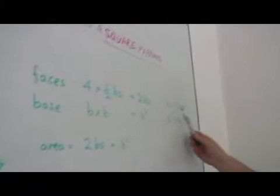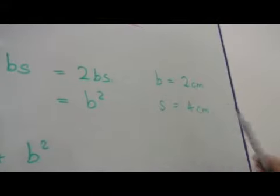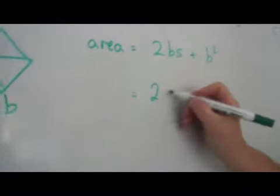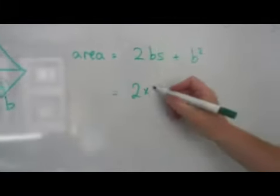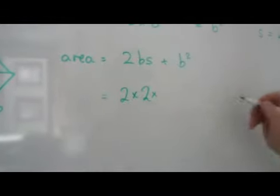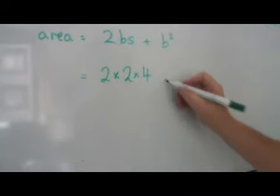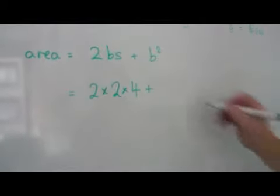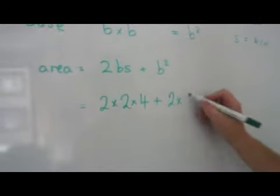Let's try that now with B at two centimeters and S at four centimeters. So, the area is going to be two times B, which is two, times S, which is four, plus B squared. And remember, B squared is B times B, two times two.